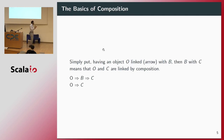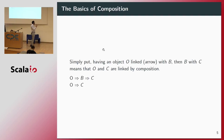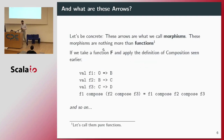Simply put, I have an object O which has an arrow from O to B, and B which has an arrow from B to C. That means O and C are linked by composition and we can have an arrow from O to C. That's really straightforward.